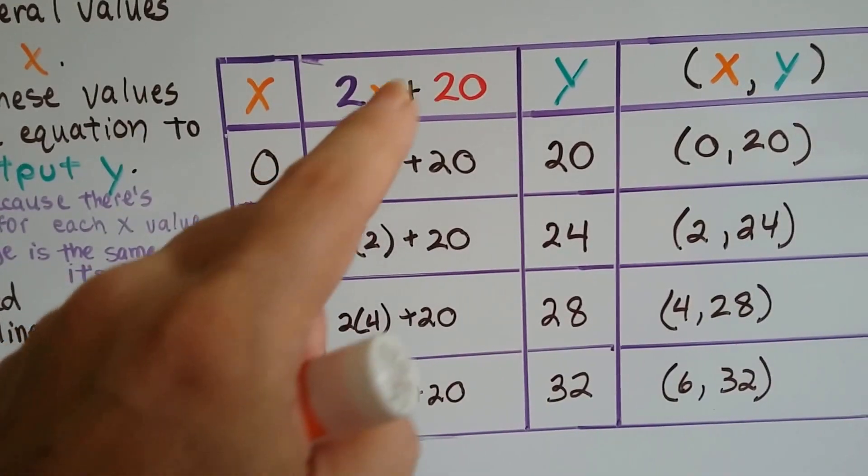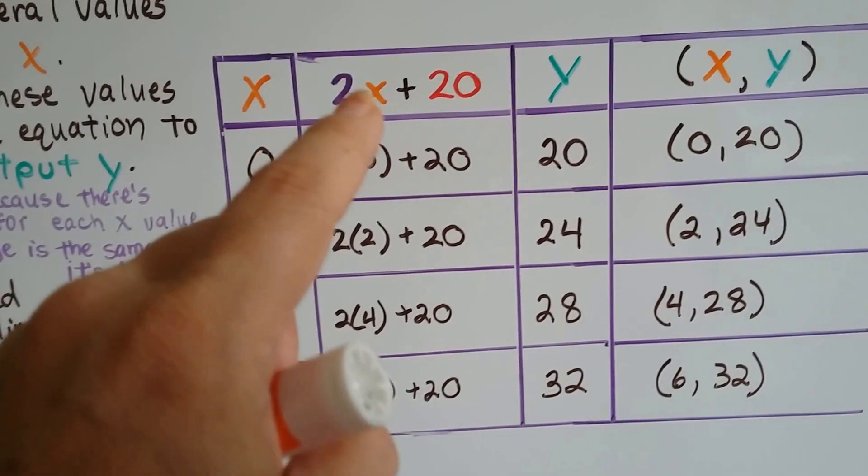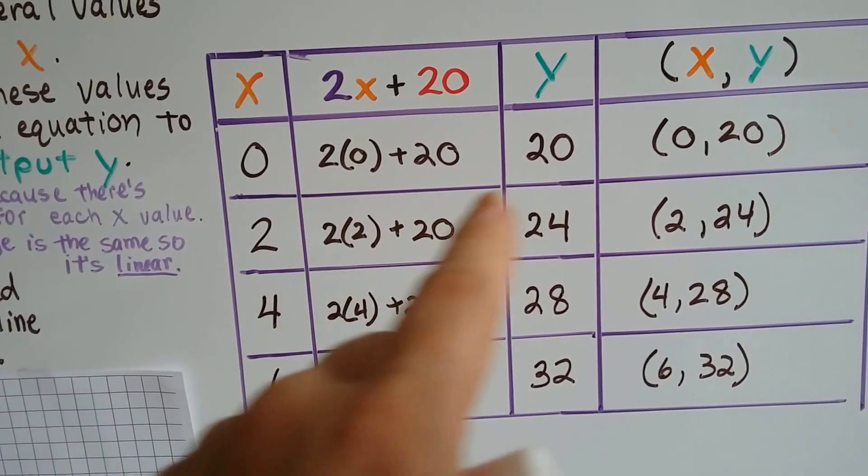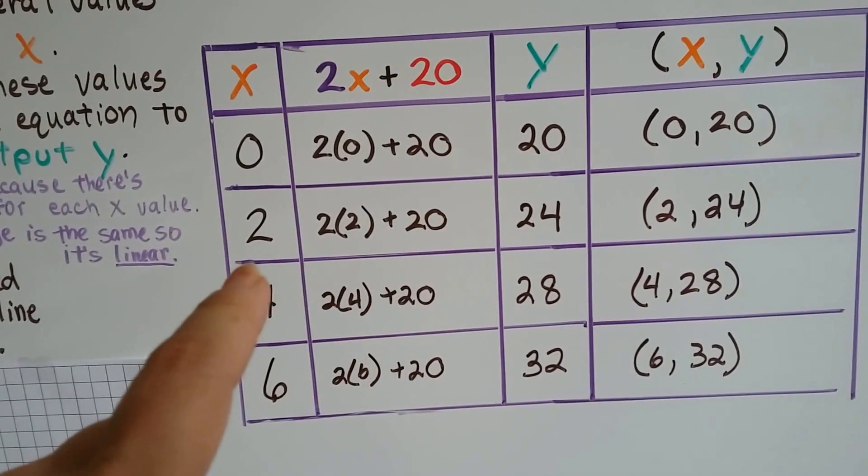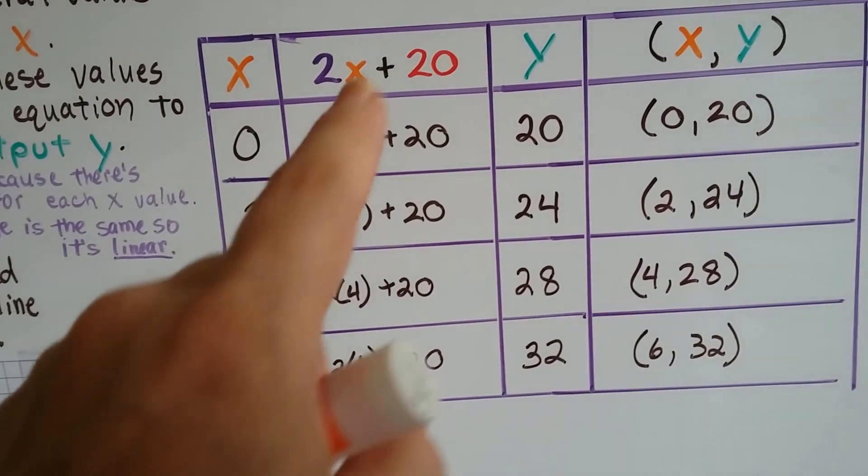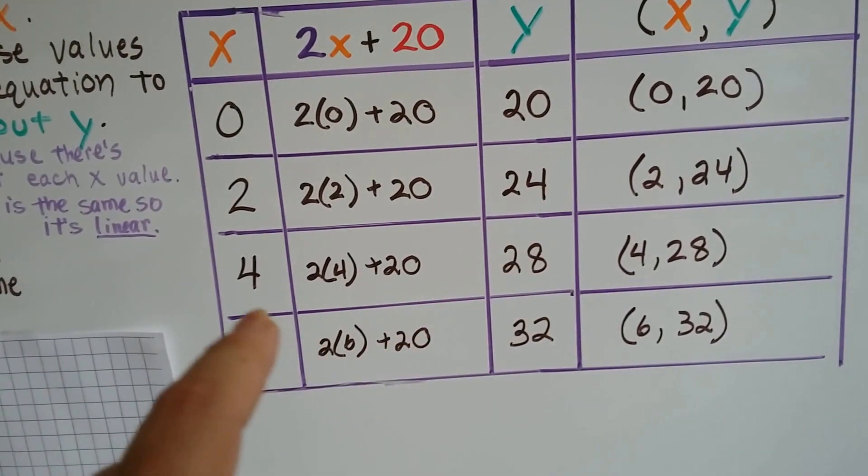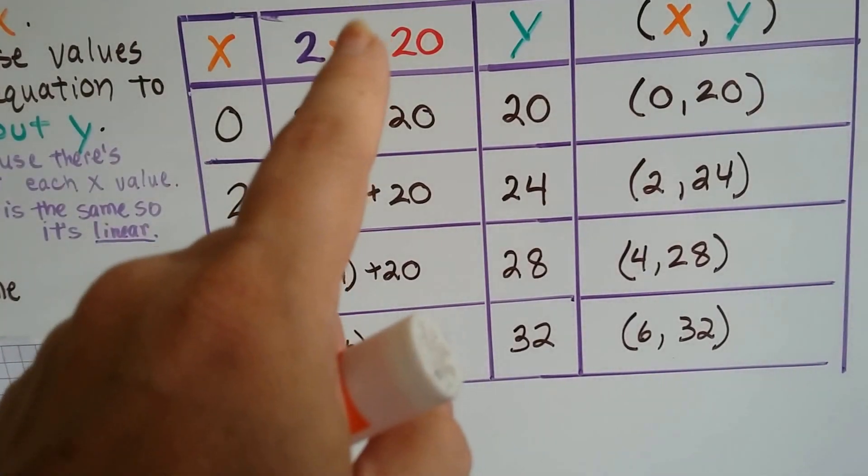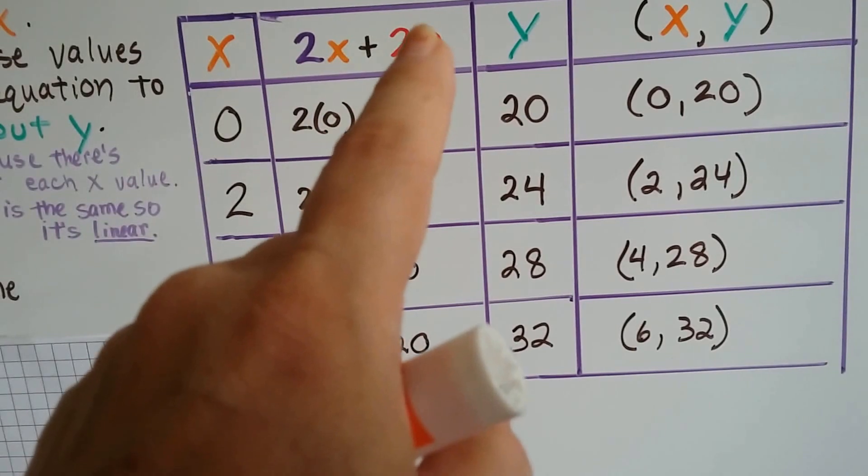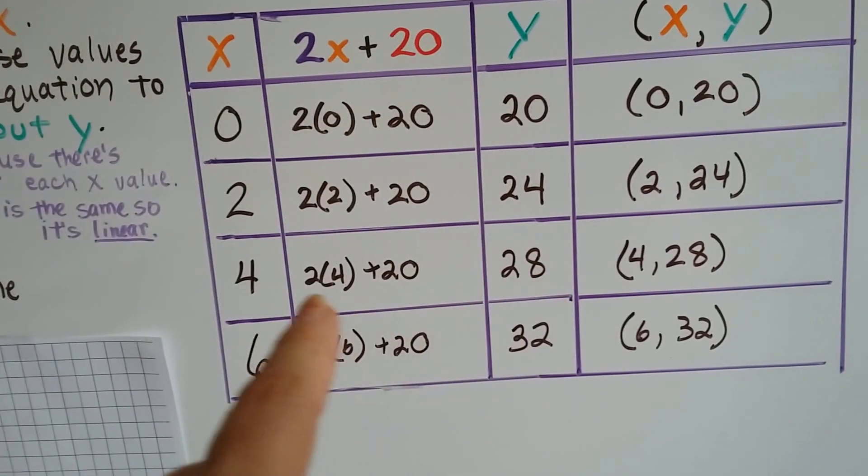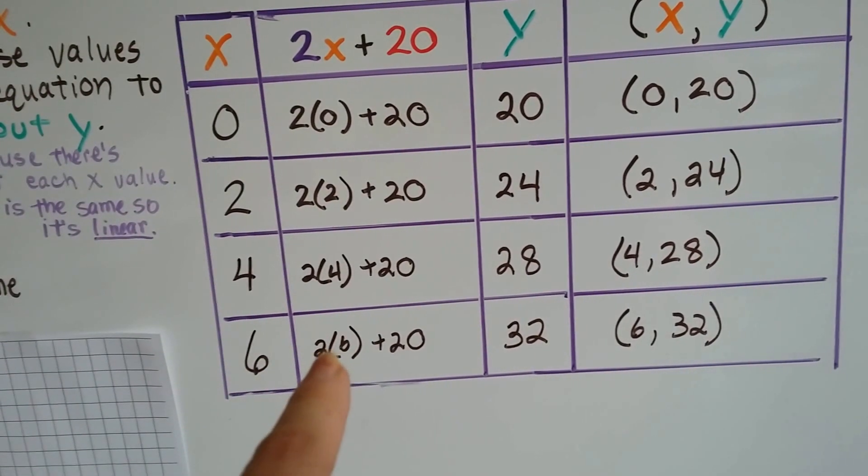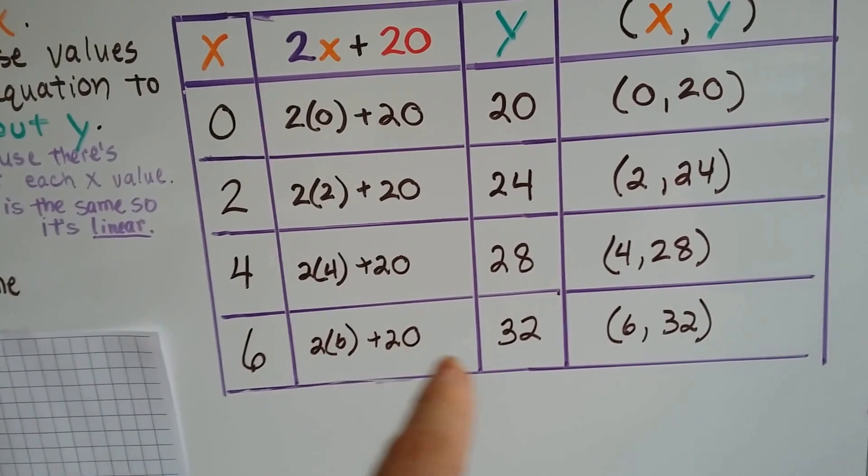If we put in a 0 for that x, it's going to be 2 times 0 plus 20. That'll equal 20. If we put in a 2 for the x, it's going to be 2 times 2 is 4 plus 20. That's a 24. If we put in a 4 for the x, that's 2 times 4 is 8 plus 20. That's a 28. And if we put in a 6, that's 2 times 6 plus 20. That's 12 plus 20 or 32.